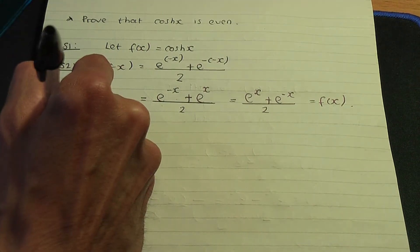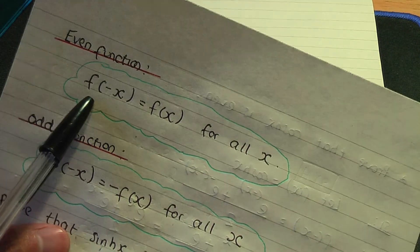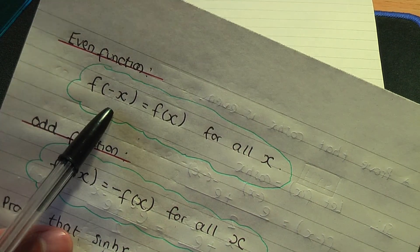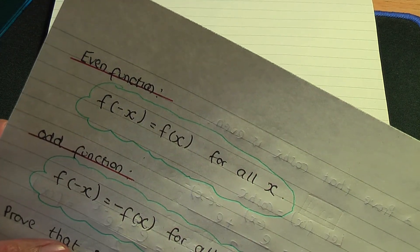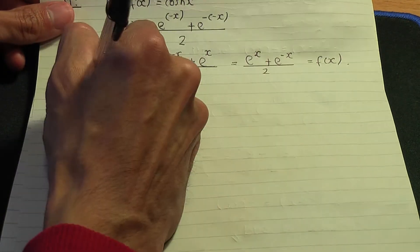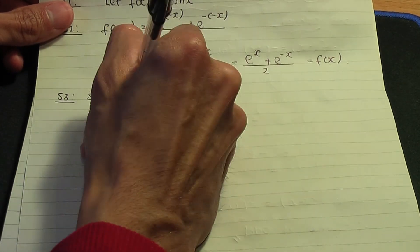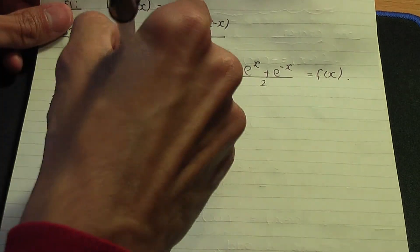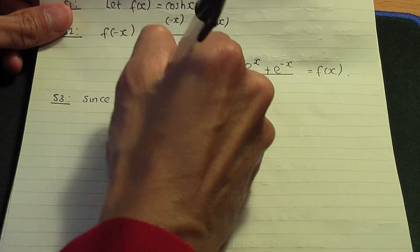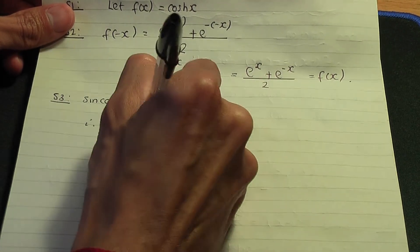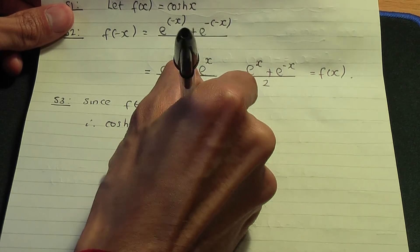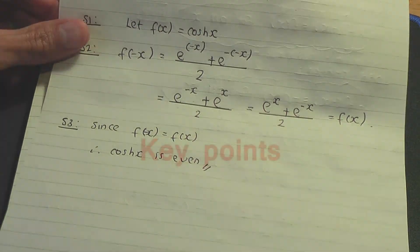So let's conclude with step number three. Going back to our definition for even functions: since f of minus x is indeed f of x, we have an even function for hyperbolic cosine. Therefore, since f of minus x equals f of x, hyperbolic cosine is indeed even. That concludes the proof.